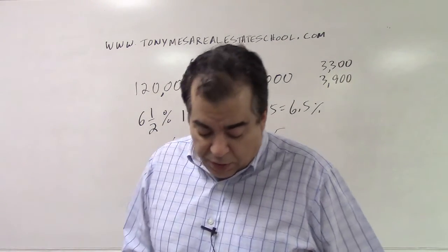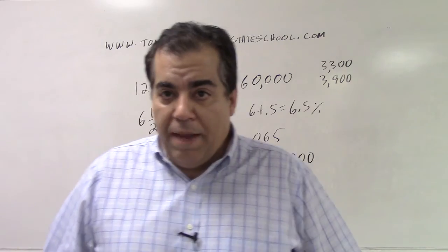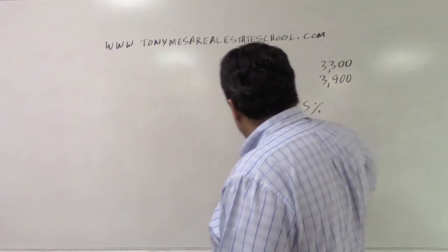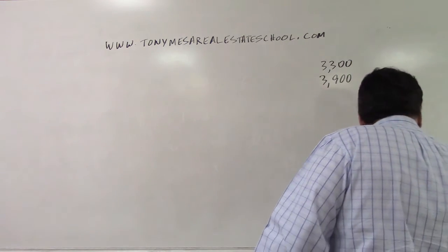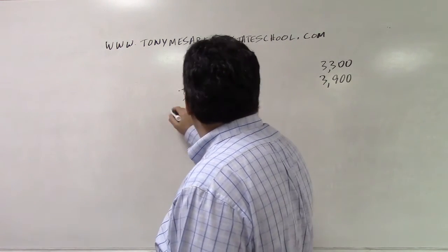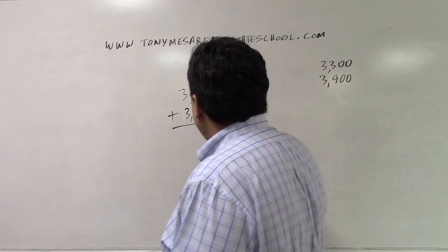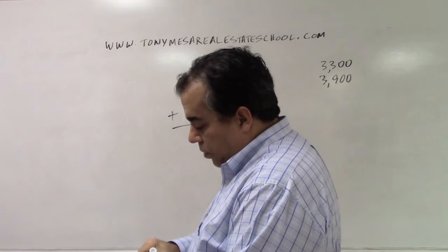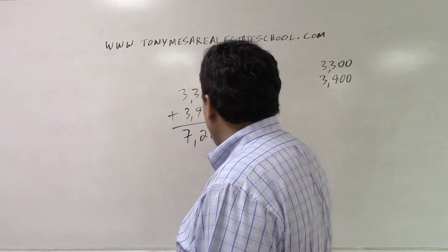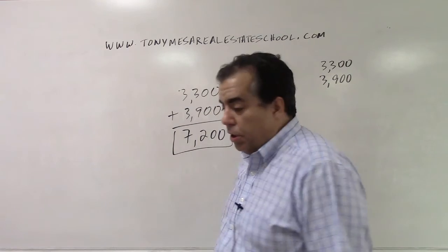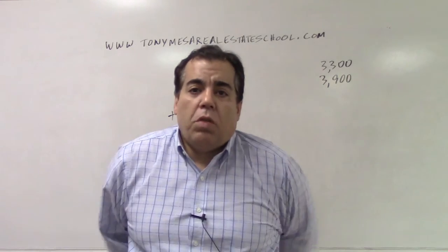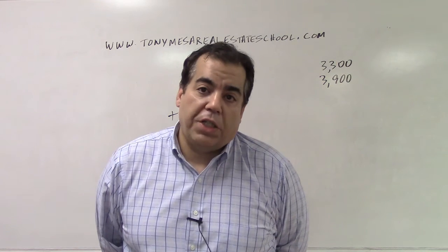Now, they're not telling you there's a sales associate or a cooperating broker — you can't make up stuff on the state exam, you've got to use only the information they give you. The question is: what's the total commission? Take $3,300 plus $3,900 and that gives you $7,200. That is the total commission that's going to be paid.